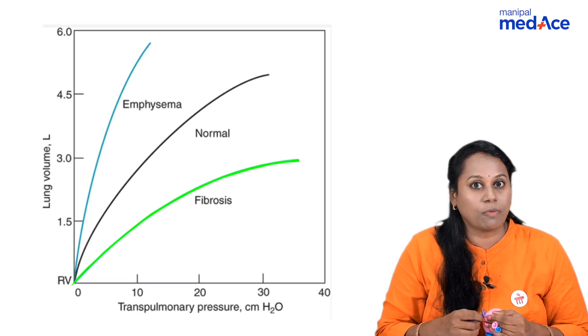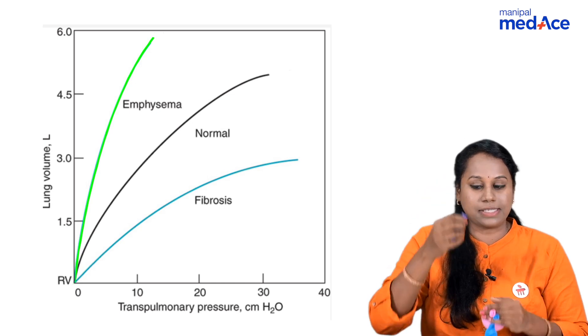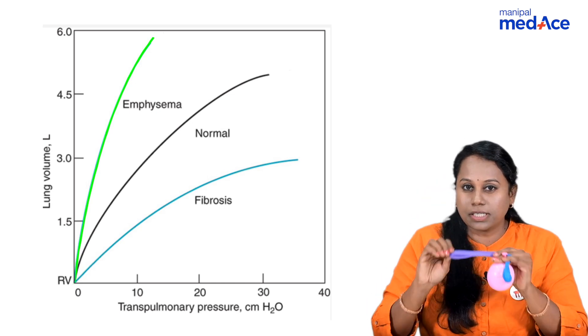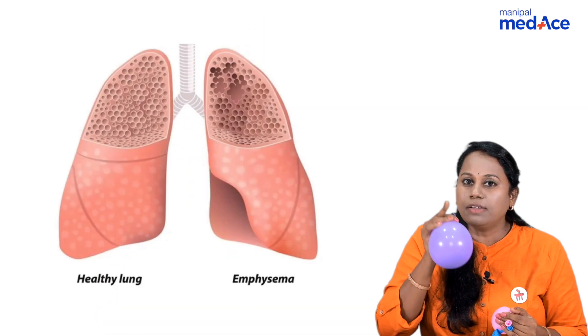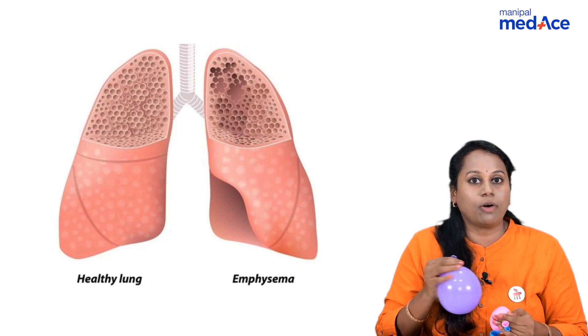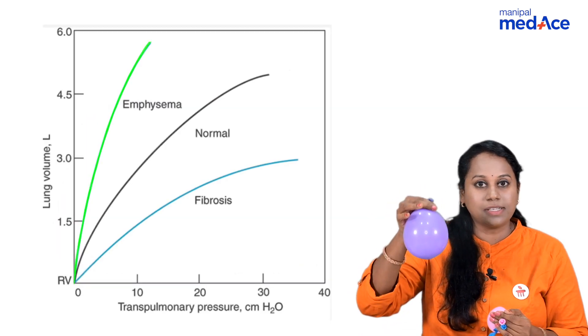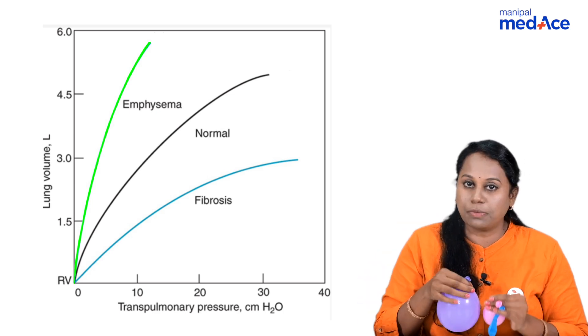What happens to compliance in emphysema? If this is an emphysematous lung, I will apply the same pressure. The change in volume is so much, because emphysema is a condition where all the individual alveolar septa are damaged. All of them join to form one big sac which can expand very well. So, compliance has increased in emphysema.